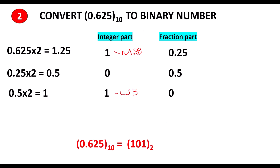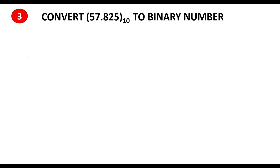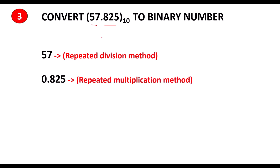Problem 3: convert 57.825 from base 10 to binary number. In this decimal number we have both the integer part and the fraction part. For this, we use the repeated division method to convert 57 to its equivalent binary number, and the repeated multiplication method to convert 0.825 to its equivalent binary number, then combine both.